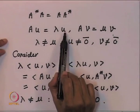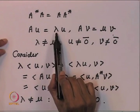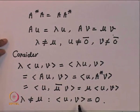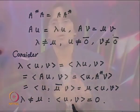So if u and v are eigenvectors corresponding to distinct eigenvalues, they are perpendicular. This is a property of normal matrices; in general it will not be true.